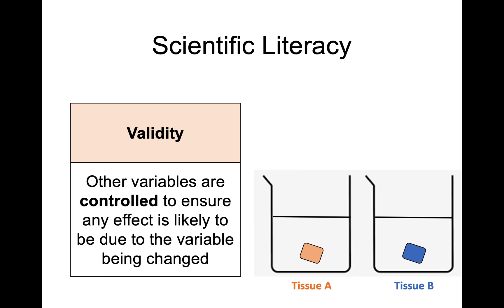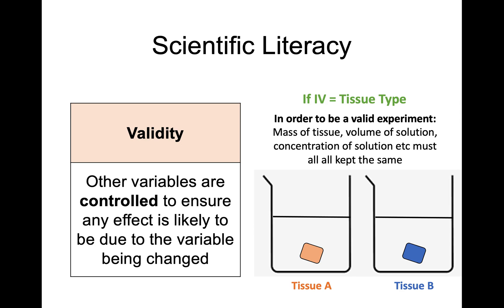So for example here we have a bicep of two tissues, and this is quite a popular experiment during enzymes where you might have two types of tissue that have different concentrations of catalase, and you're trying to determine which one has the highest concentration of catalase. Now in order for this to be a valid experiment, in order for it to be a fair experiment, everything else apart from the two tissue types should be exactly the same. So if our independent variable is tissue type, in order for it to be valid and fair we need to look at every other variable that could affect the results.